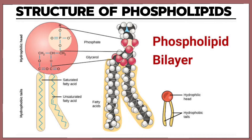Because of the polar hydrophilic region and the non-polar hydrophobic region, phospholipids are amphipathic molecules. It should be noted that phospholipids are the major constituent of the cell membrane — the lipid bilayer — which allows certain substances into the cell and prevents certain other substances from entering, making it semi-permeable.